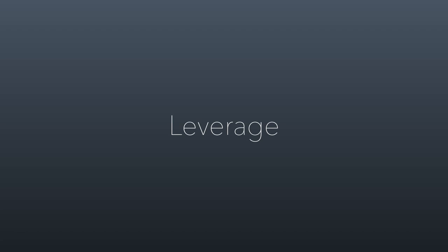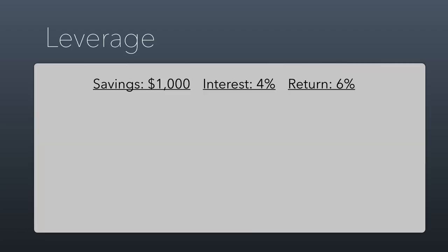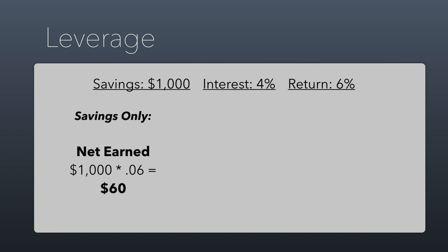So back to leverage. I'll first illustrate how it works for a regular investment opportunity — the kind of thing a business might be engaged in. Pretend a business has $1,000 set aside. It can borrow money at a 4% interest rate, and the opportunity in front of them will return 6% on their investment. If they take that $1,000 and invest it, they get a 6% return — a net return of $60. That's good, but it could be better, and the way you make it better is by borrowing and leveraging your savings.